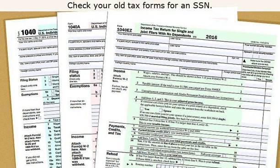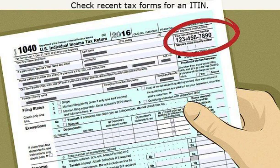Step four, check your old tax forms for an SSN. All individual tax forms — 1040, 1040A, or 1040EZ — list the taxpayer's SSN in the top right corner of the first page. Step five, check recent tax forms for an ITIN. If you do not have an SSN but have filed taxes in the past, those forms used an ITIN, Individual Taxpayer Identification Number. If you received a letter telling you to renew your ITIN, or if you have not used an ITIN since before 2013, fill out Form W-7 to request a new ITIN. It takes about seven weeks to get a new one.